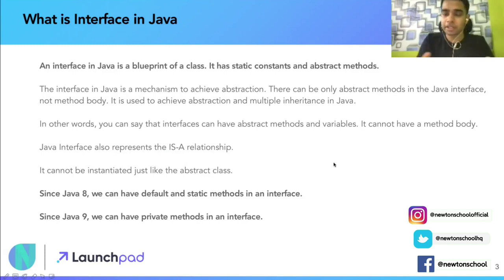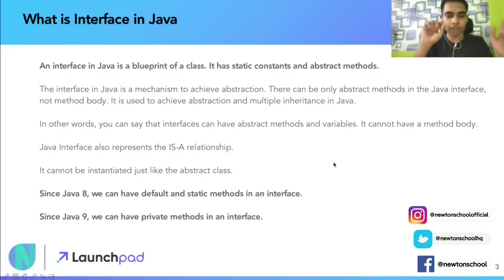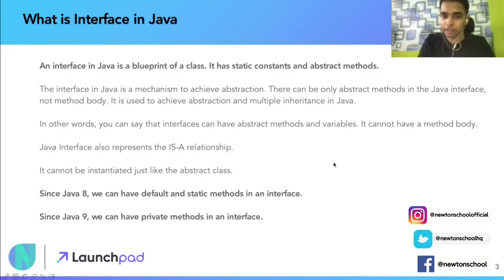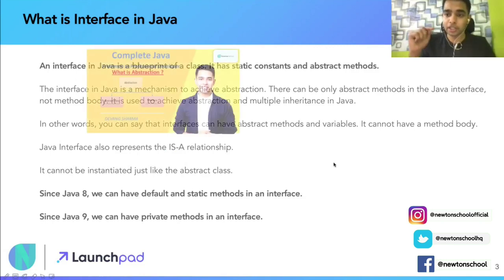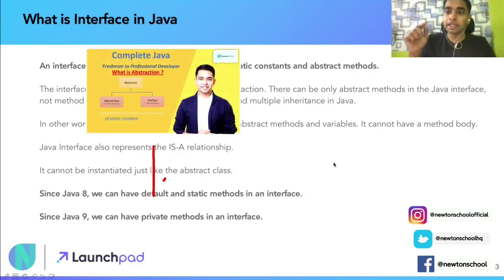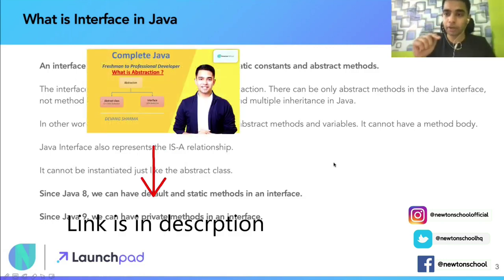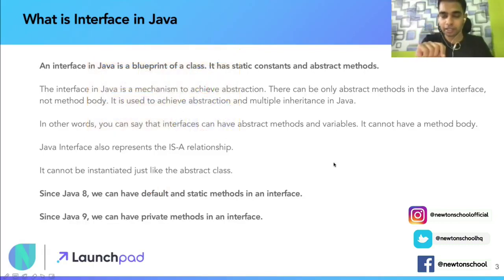Number one: what is an interface in Java? An interface in Java is a blueprint of a class — like a map or structure of a class. It has static constants and abstract methods. These are abstract methods, meaning they have no implementation body. If you haven't watched the previous video on abstract classes and abstract methods, the link is in the description.